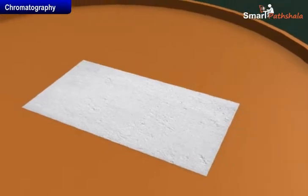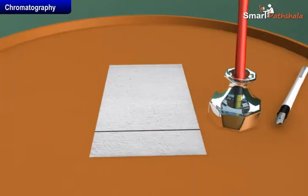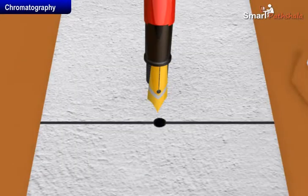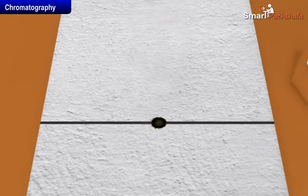Take a thin strip of filter paper. Draw a line on it using a pencil approximately 3 cm above the lower edge. Put a small drop of ink, water soluble that is, from a sketch pen or fountain pen at the center of the line. Let it dry.